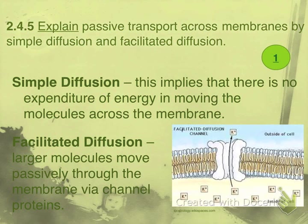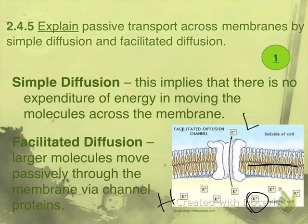Facilitated diffusion involves a larger molecule that is still driven by diffusion — moving from a higher to a lower area of concentration — but the molecule is too large or has a charge that prevents it from moving through the lipid bilayer. In this case, we're looking at potassium ions. Potassium ions are charged, so they cannot move through directly. This requires the use of a membrane protein — an integral protein. Potassium passively moves from the higher concentration side to the lower concentration side, but because of the charge, it requires a path through the channel protein.